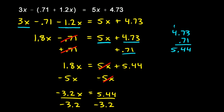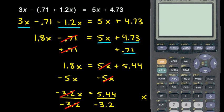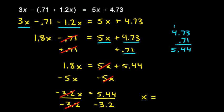And whatever I do on one side, I do on the other. On the left, the negative 3.2 and the negative 3.2 cancel out, leaving me with x all by itself. And I've run out of room at the bottom, so I'm just going to come over here. The left side is x, and then the right side is 5.44 divided by negative 3.2. And so let's see what that says. I have 5.44 divided by negative 3.2, and I hit enter. That comes out to negative 1.7. That's my answer.